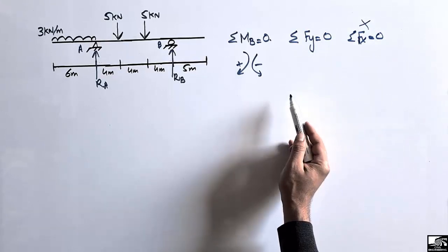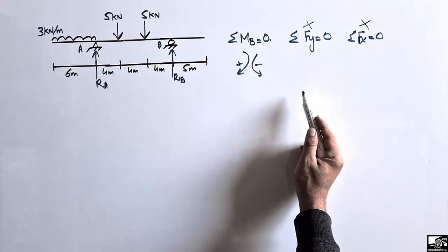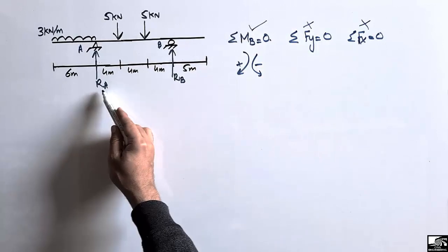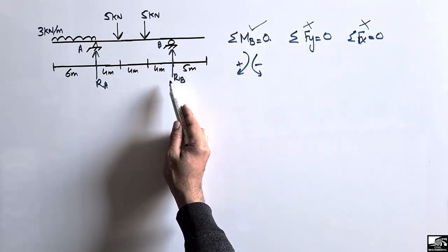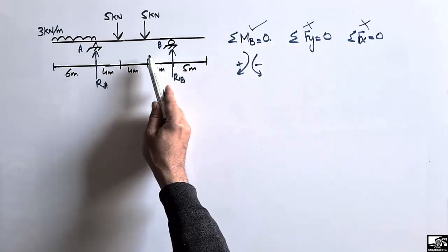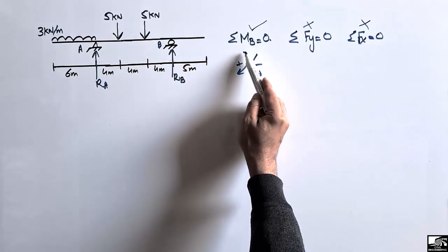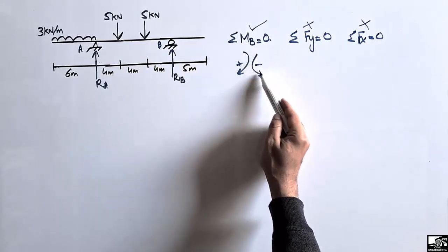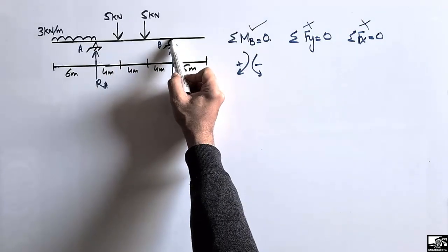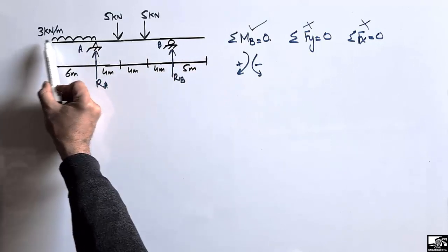Since we have two unknowns, we cannot directly use the vertical force equation either. The only way to find the support reactions with two unknowns is summation of moments at any point equal to zero. So we take summation of moments at point B equal to zero. Let's suppose clockwise moment is positive and anti-clockwise is negative. All moments at point B equal zero — starting from the distributed load of 3 kN per meter.